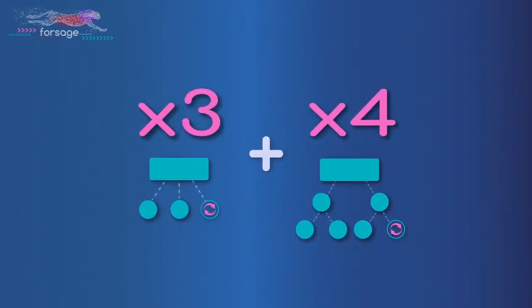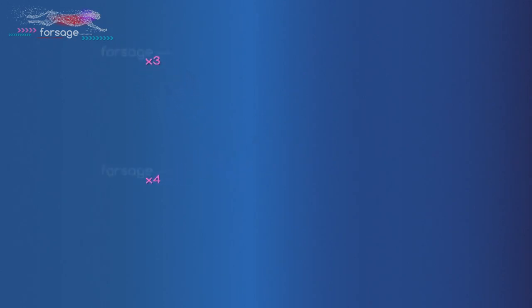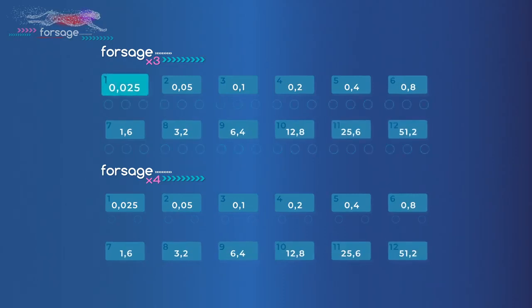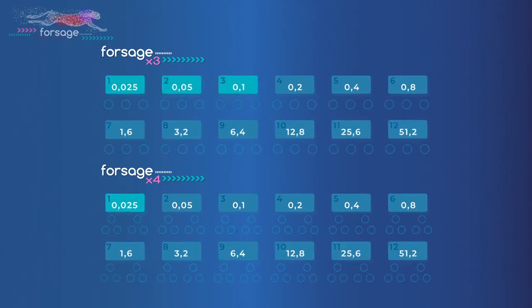When you register in Forsage, you open both programs simultaneously. Slots. Each of two programs, X3 and X4 has 12 slots. They all are identical and work in the same way.